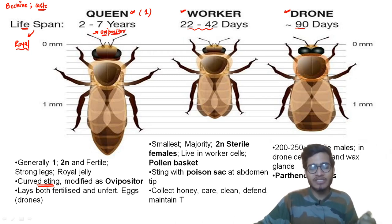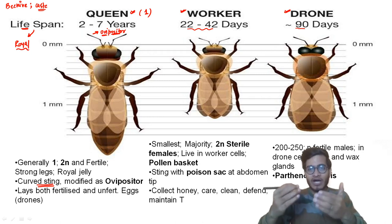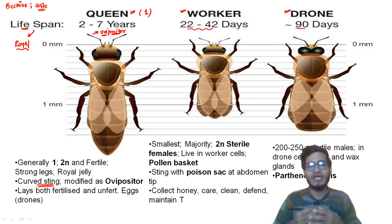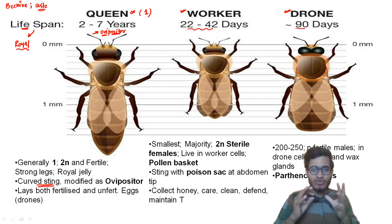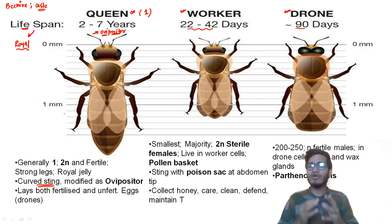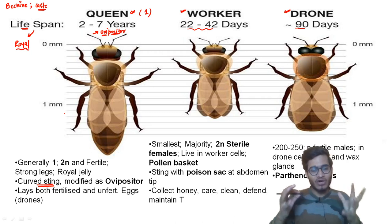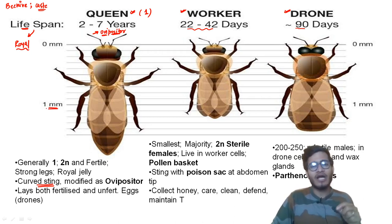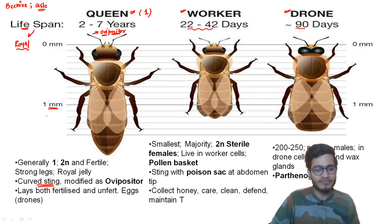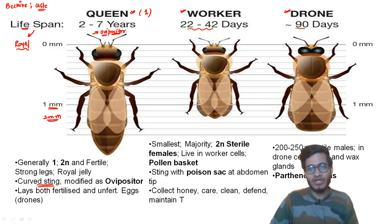Ovipositor — 'ov' means related to egg, and 'positor' means positioning — so it determines where and how to lay the egg. These curved stings functioning as ovipositor are only found in the female, that is the queen. The queen's size is around 1.7 to 2 mm, making her clearly the largest and easily identifiable among all bees.